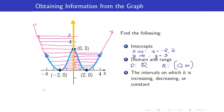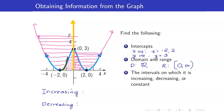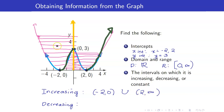Now for the intervals on which the function is increasing, decreasing, and constant. It is not constant anywhere. Tracing the graph, it starts increasing, then begins decreasing going down, then starts increasing again. The increasing intervals are from negative 2 to 0 union 2 to infinity. The function is decreasing on negative infinity to negative 2 union 0 to 2.